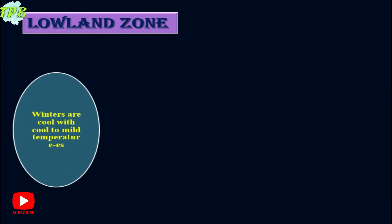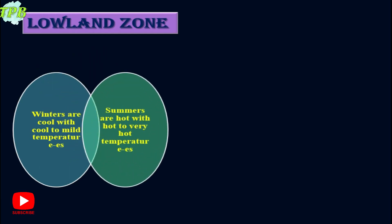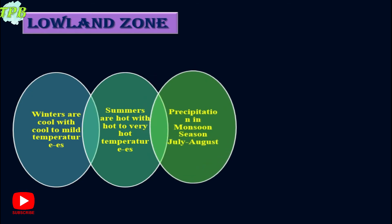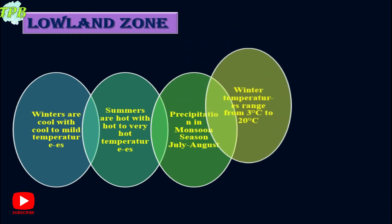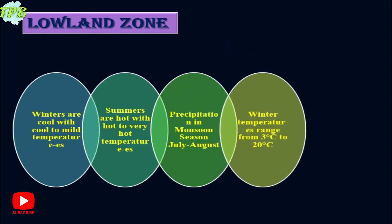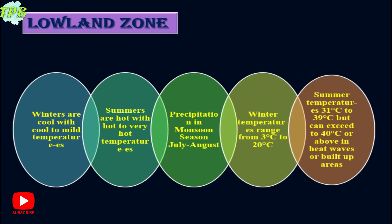In the lowland zone, winters are cool with cold to mild temperatures. Summers are hot with hot to very hot temperatures. Precipitation is mostly in the season of monsoon during July and August. Winter temperatures here range from 3 degrees Celsius to 20 degrees Celsius, and the summer temperatures range from 31 degrees Celsius to 39 degrees Celsius.